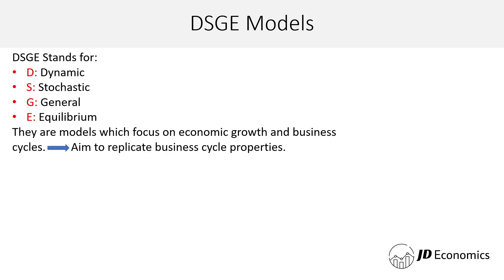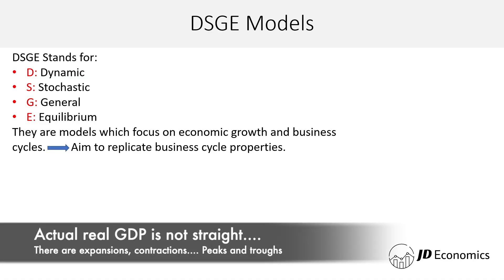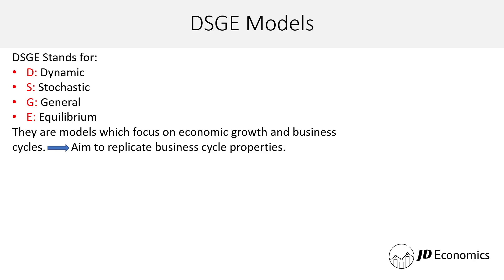Real GDP is not a straight line — it's going to be choppy. There are moments where the economy is expanding, which are good moments for most inhabitants. But then there are moments of contraction, reaching a recession if that contraction lasts at least two quarters. These models focus on understanding what drives these cycles and what's the impact of diverse policies.